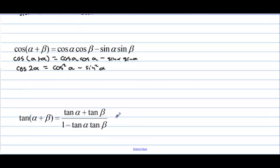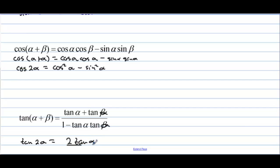So cosine of 2 alpha equals cosine squared alpha minus sine squared alpha. For tangent, the double angle formula gives tangent of 2 alpha equals 2 tangent alpha over 1 minus tangent squared alpha.